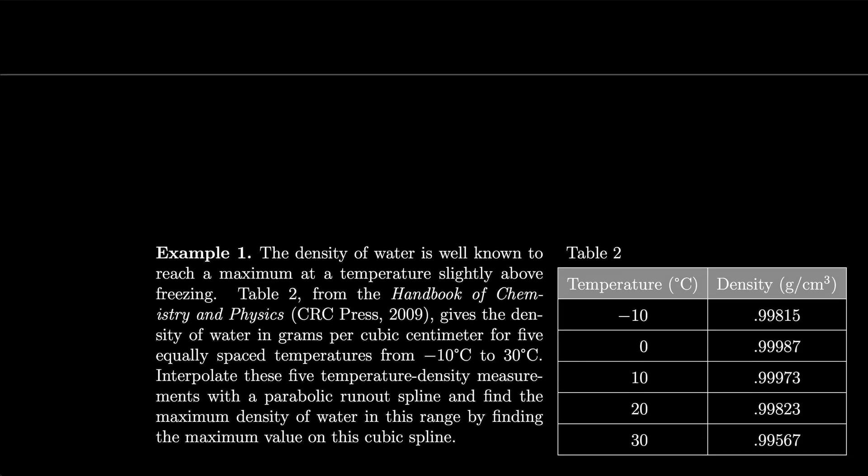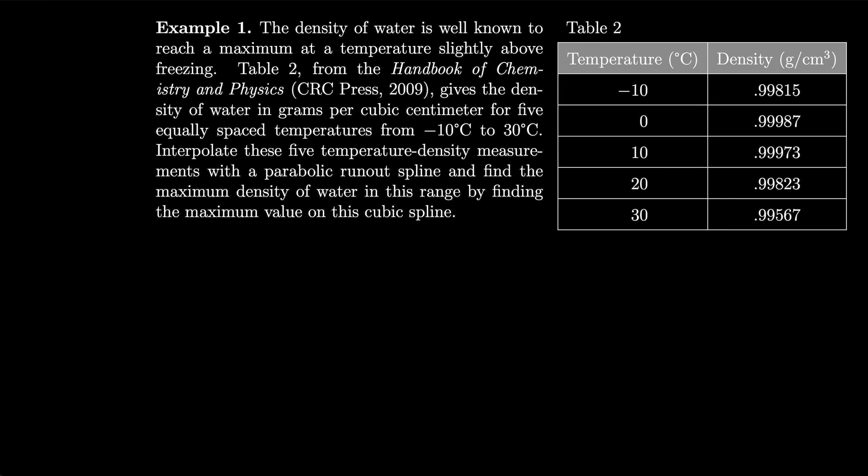So let's do an example. We'll find a cubic spline. The density of water is well known to reach a maximum at a temperature slightly above freezing. Table 2 from the Handbook of Chemistry and Physics, CRC Press 2009, gives the density of water in grams per cubic centimeter for five equally spaced temperatures from -10°C to 30°C. Let's interpolate these five temperature density measurements with a parabolic runout spline and find the maximum density of water in this range by finding the maximum value on this cubic spline.